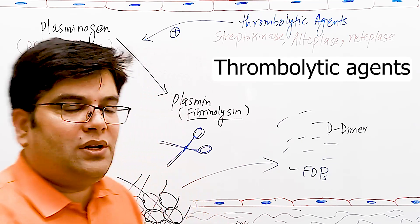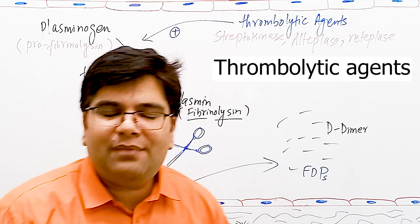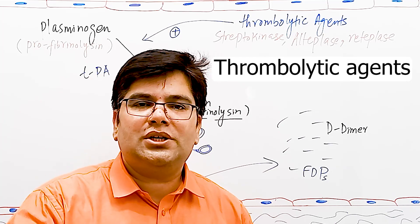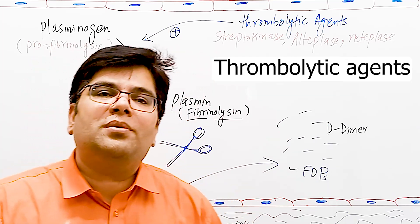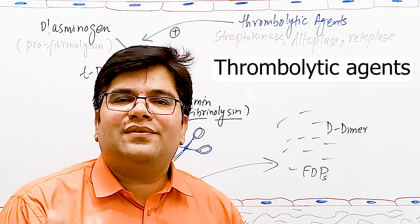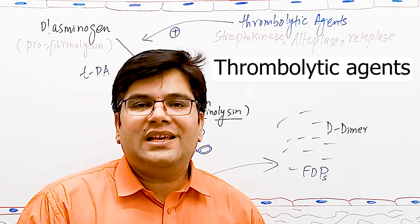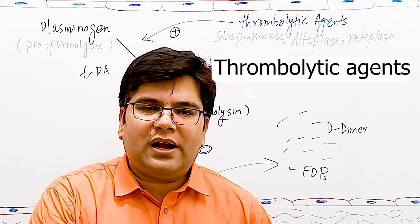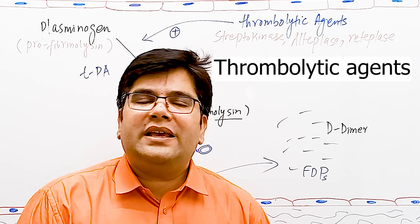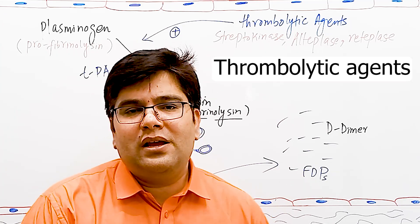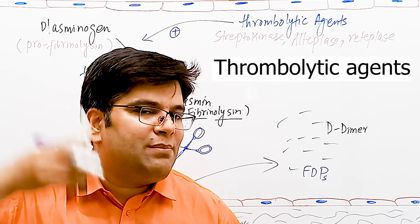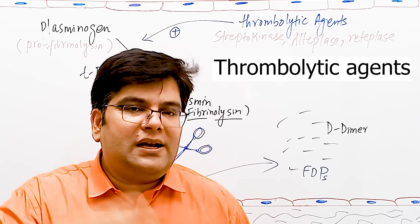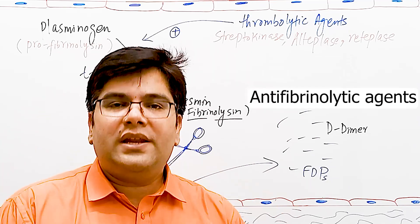These are clinically very useful substances because they can be used to break clots formed in the coronary blood vessels after myocardial infarction, or clots formed in brain blood vessels in case of stroke or transient ischemic attack. If these thrombolytic agents are given very quickly in the first few hours after myocardial infarction or stroke, they can be very beneficial and life-saving, as they break the clot in the coronary or cerebral vessels, restore blood supply, and prevent damage to the heart or brain due to oxygen deprivation.